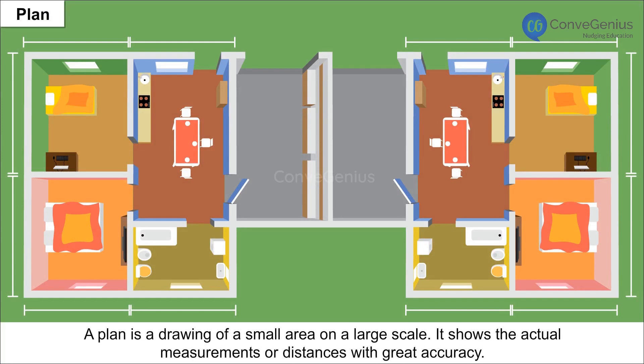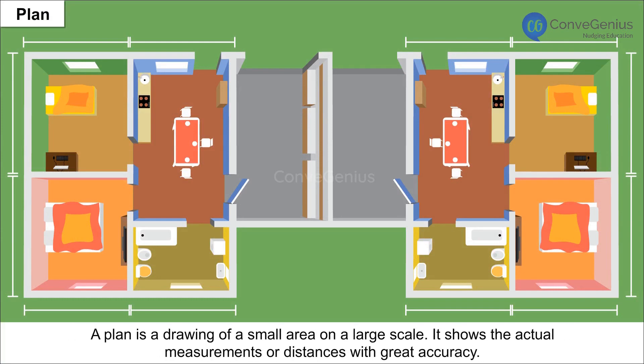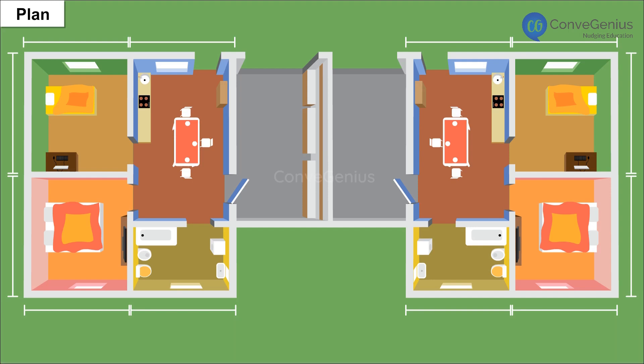Plan: A plan is a drawing of a small area on a large scale. It shows the actual measurements or distances with great accuracy. For example, the plan of Wimmel's house is shown here. It provides the dimension of each room, position of doors and windows, height of walls and corridors. Here the scale used is 1 cm equal to 2 m.